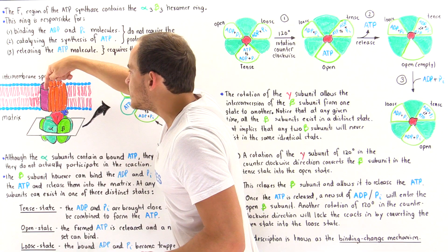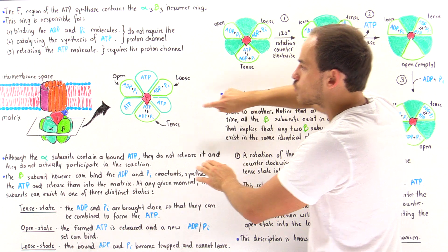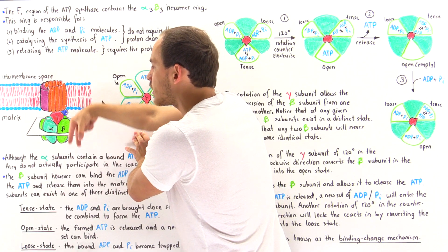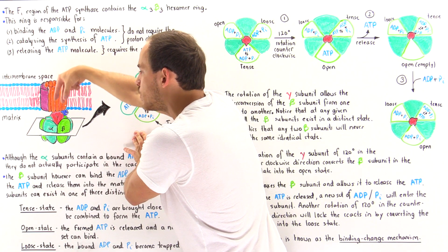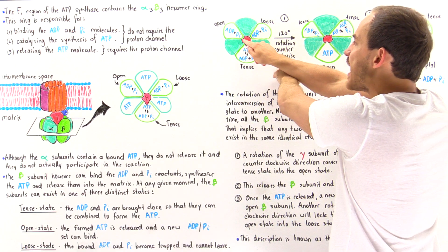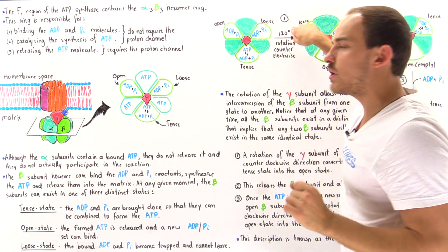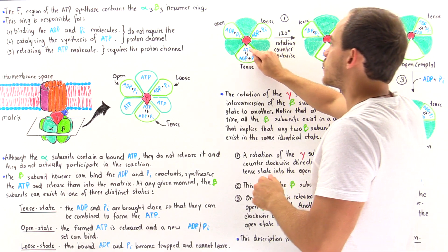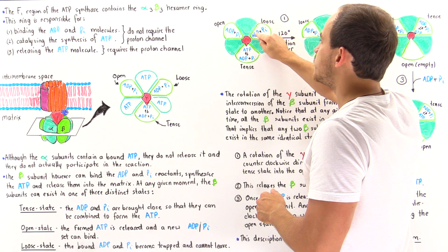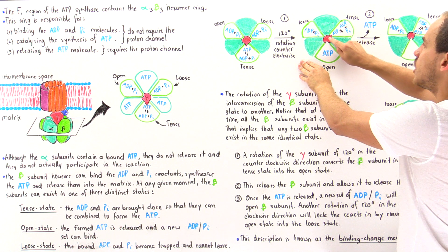When the gamma structure — the central stalk moving through the central cavity of the hexamer ring — rotates 120 degrees counterclockwise, the pointer moves from one position to the next. This causes the beta subunit previously in the Tense state to shift, and the subunit previously in the Open state to enter the Loose state.